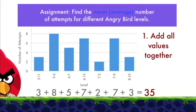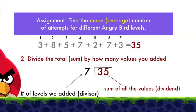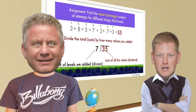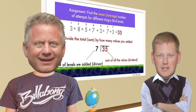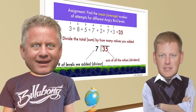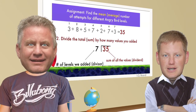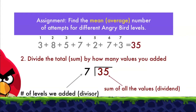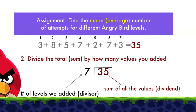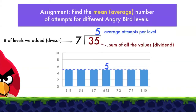So that was step one — add all the values together. We have 35. Now here's the second step: we're going to divide that total or the sum by how many values we added. We added seven different numbers together to get 35 — one, two, three, four, five, six, seven. So the number of levels is our divisor and our total is our dividend. So 35 divided by 7, and our answer is 5. So five average attempts per level — our mean is five.